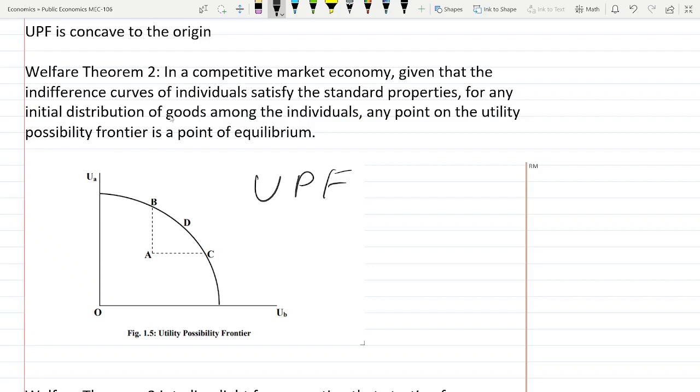Welfare theorem 2 says that in a competitive market economy, given that individual indifference curves satisfy the standard properties, for any initial distribution of goods among the individuals, any point on the utility possibility frontier, on this curve, is a point of equilibrium. Whatever is the initial distribution, if the point is on this curve, the utility possibility frontier is the maximum possible utility a society can derive through the available resources. Every point on this utility is the maximum society can derive through the available resources.